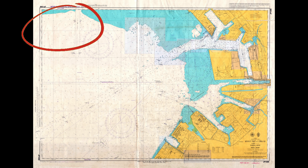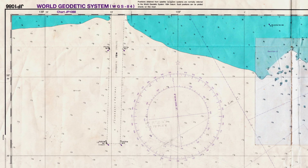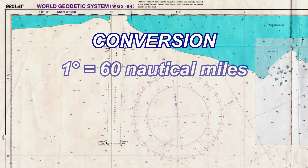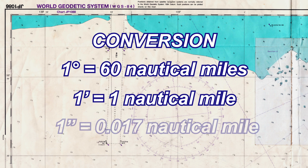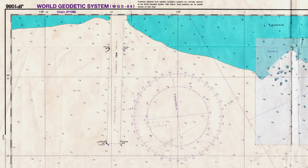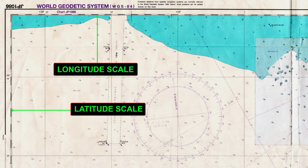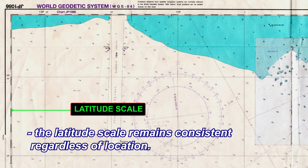Now let's zoom in on this corner of our nautical chart. Before we start measuring distances, it's important to understand the conversions used in nautical charts. One degree equals 60 nautical miles. One minute equals one nautical mile. One second equals 0.017 nautical miles. On the sides of the nautical chart, you'll find two types of scales: the latitude scale and the longitude scale. When measuring distance, always use the latitude scale on the sides of the chart, not the longitude scale, because the latitude scale remains consistent regardless of location.